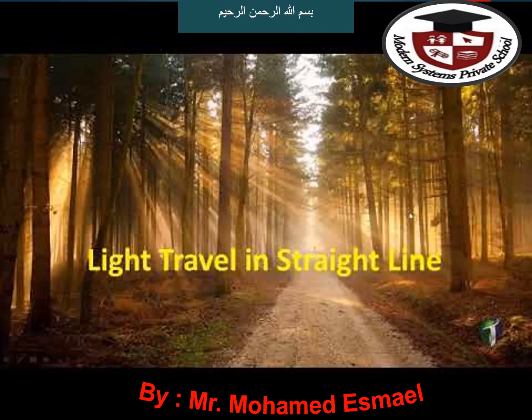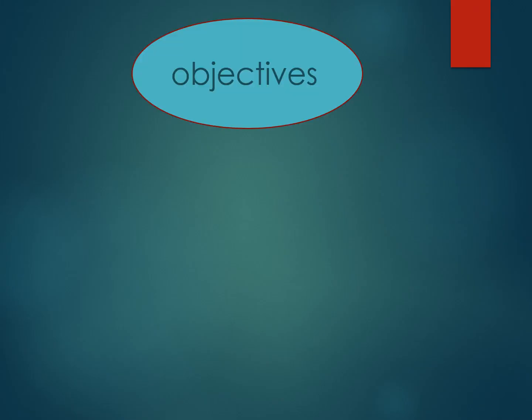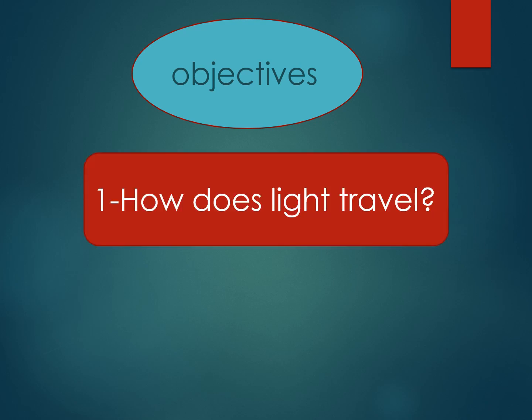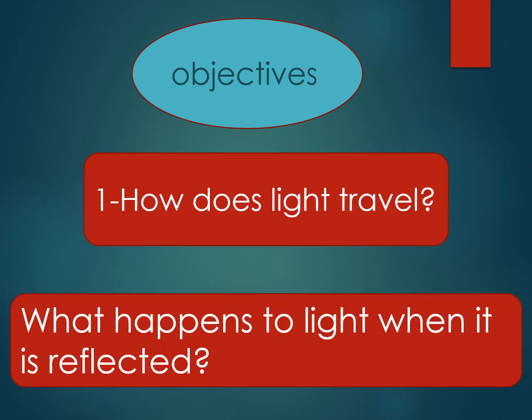We are going to learn today that light travels in a straight line. Our objectives: first, how does light travel? Second, what happens to light when it is reflected? We will watch a video to learn about light and the movement of light in straight lines.